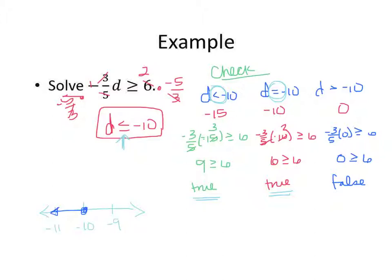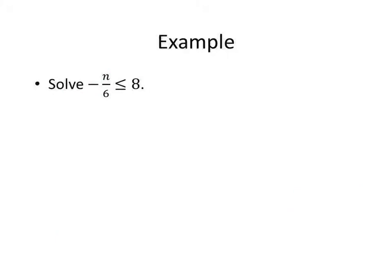Let's move on. Negative N over 6 less than or equal to 8. We have to get N by itself, so we multiply by negative 6 — the 6 on top and 6 on bottom cancel, negative times negative becomes positive — and we get N is greater than or equal to, switching the inequality because we multiplied by a negative, which gives us negative 48.